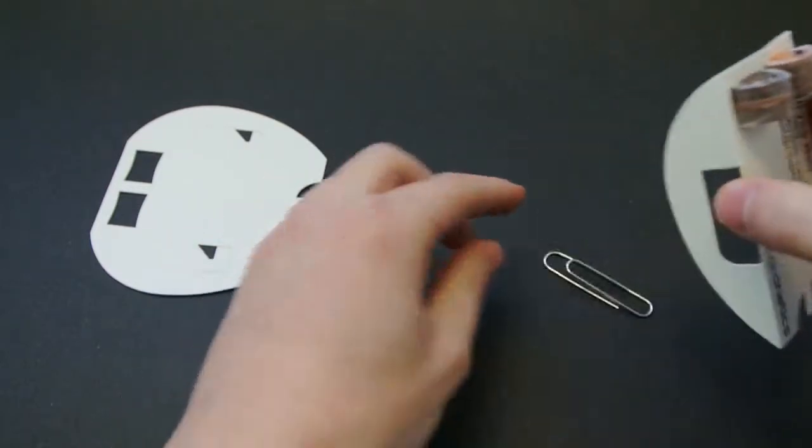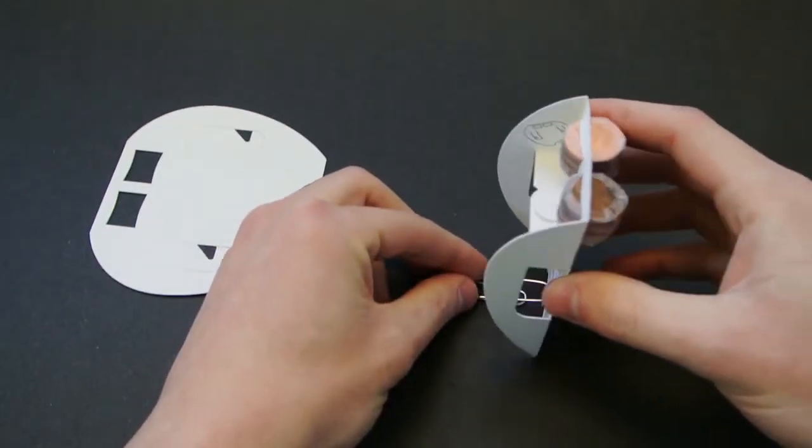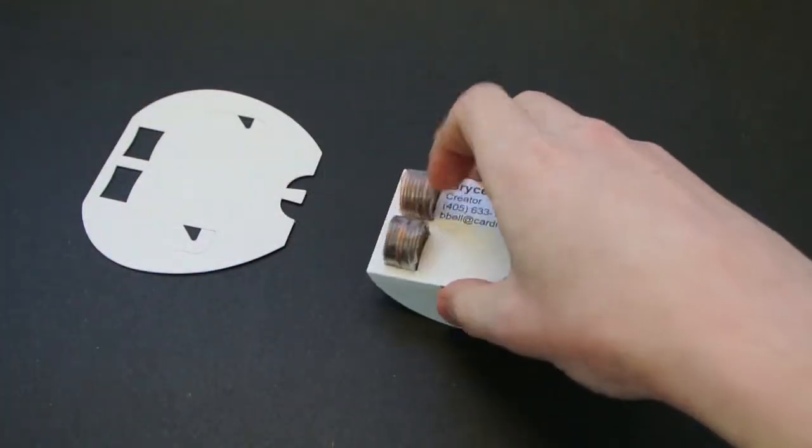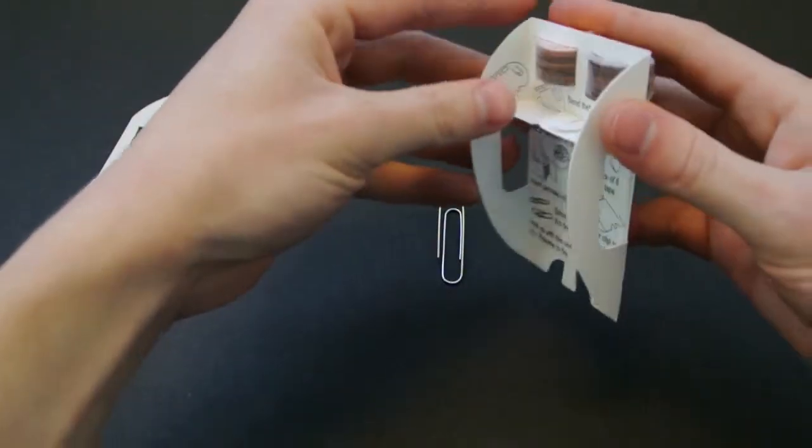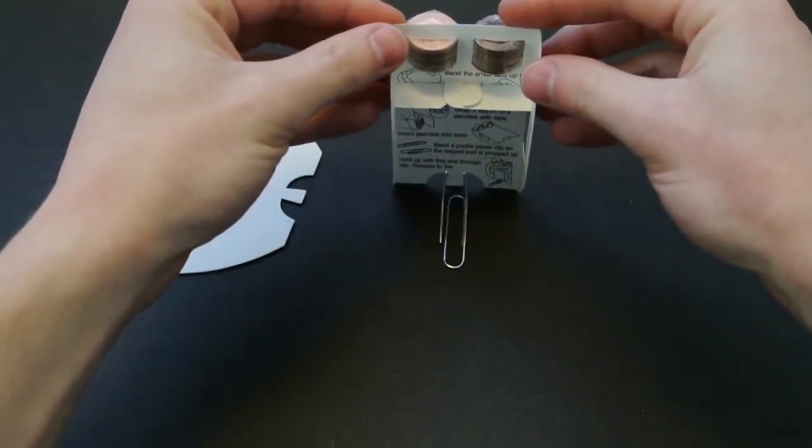Projectiles are jumbo paperclips that have been bent apart slightly. Put the jumbo paperclip on a surface, set the rear tab into the paperclip, and let the card rock forward to fire it. It typically shoots a distance of about 8 to 10 feet.